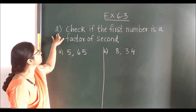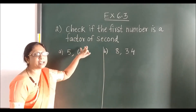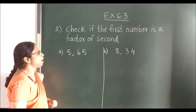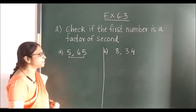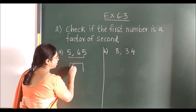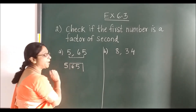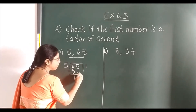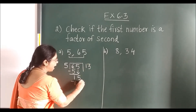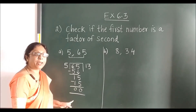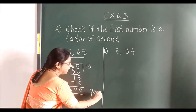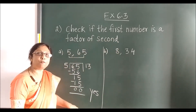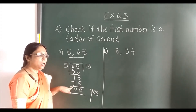Second sum: check if the first number is a factor of the second. To check, you carry out simple division. Divide 65 by 5: 5 fives are 25, subtract, bring down the next digit, 5 threes are 15, and your remainder is 0. When the remainder is 0, it is yes — the first number is a factor of the second. The remainder must be 0.